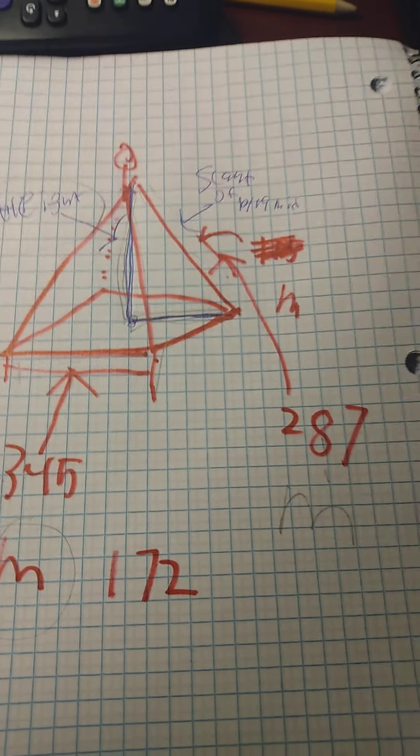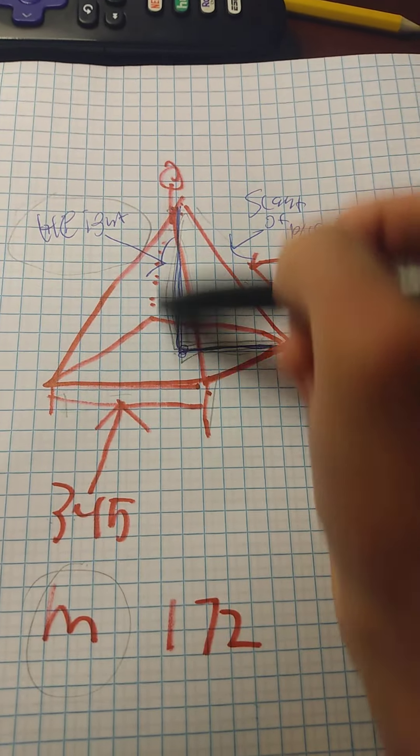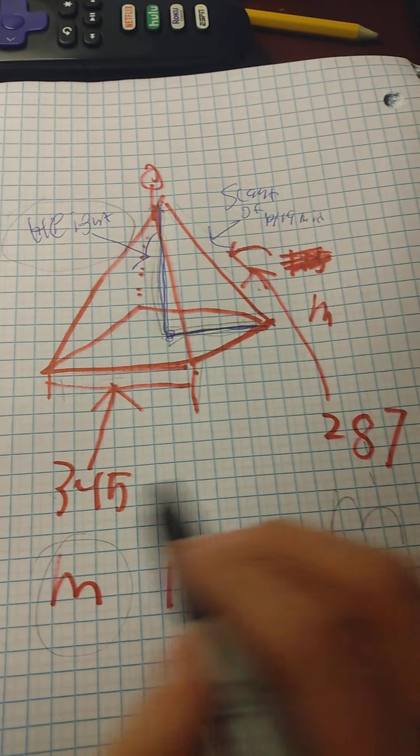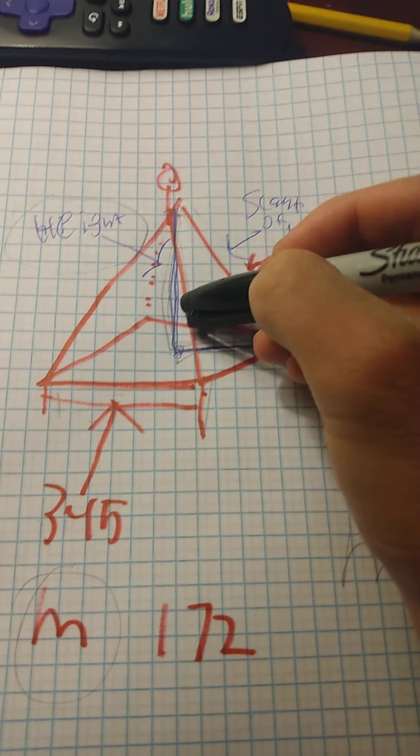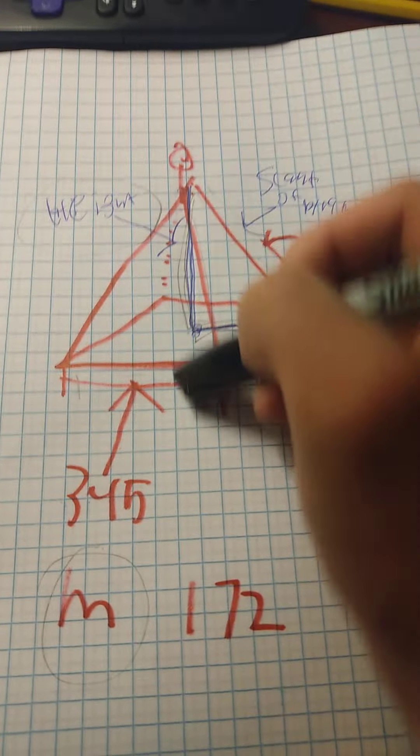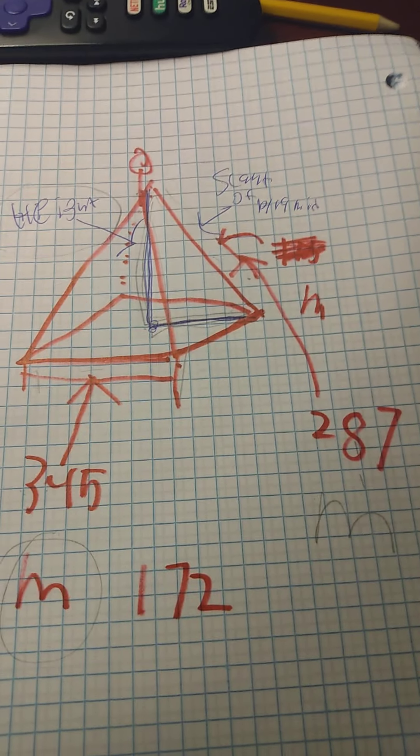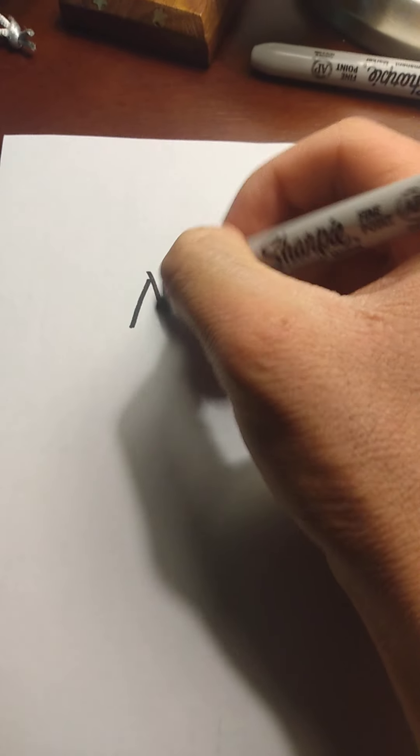He measured the tomb with these numbers on it measured in meters. The only problem is that they're missing how tall the pyramid is going to be. At least we have these two units, but the only thing that's missing that the emperor wants us to know is how tall is this pyramid going to be. Let's try and find that out.